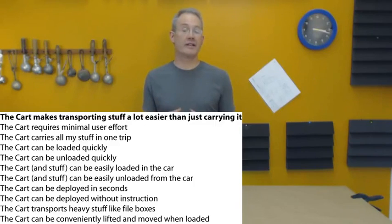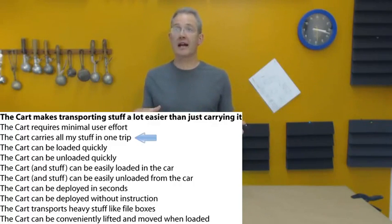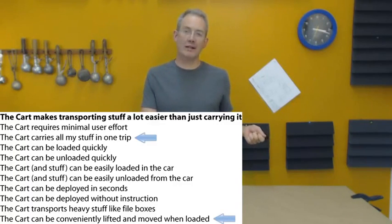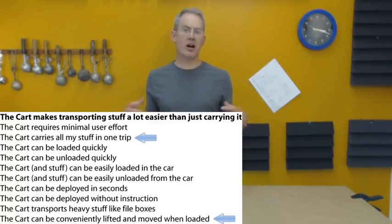The second point I want to make about the user needs is that two user needs can in fact be contradictory. So for instance, there's a need on the list of cart needs that says that the user wants the device to be able to transport all of his or her stuff in one trip. On the other hand, there's also a need that says that the cart can be easily lifted and moved while loaded. Depending on the solution that's devised, those two needs could be contradictory.